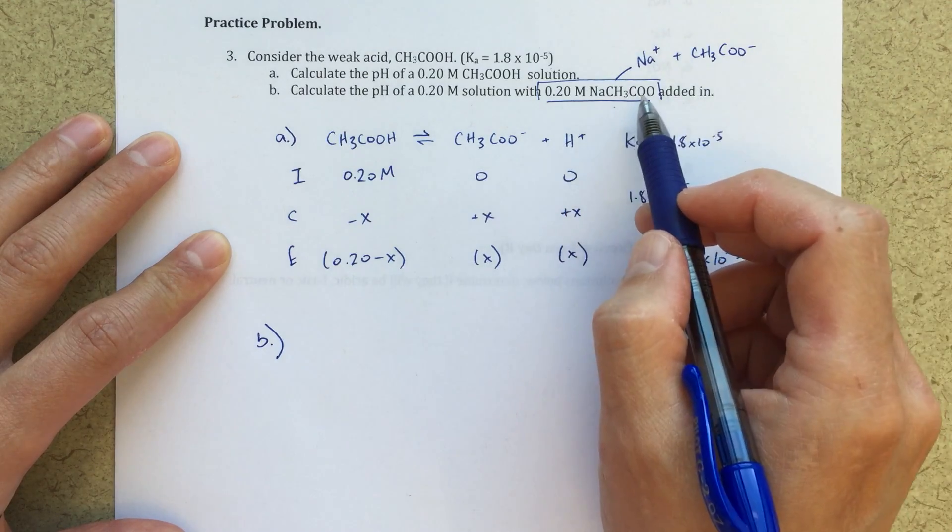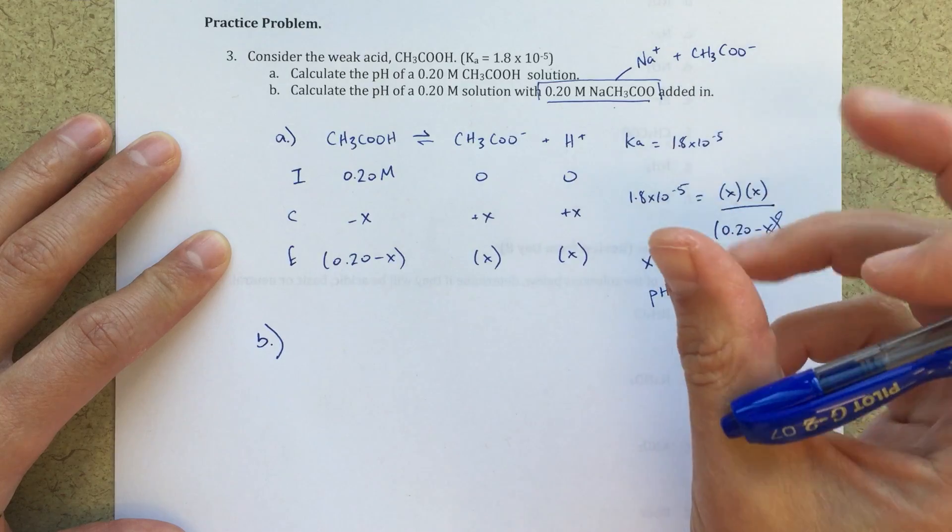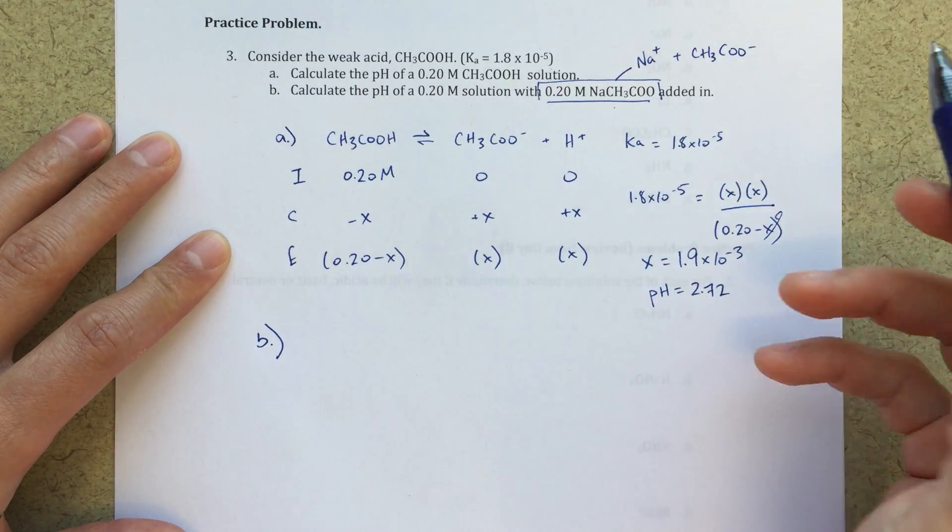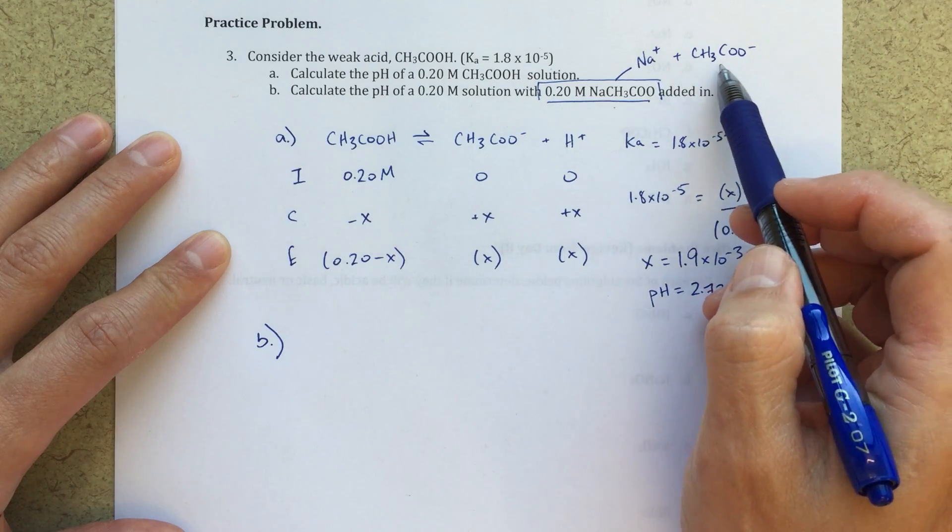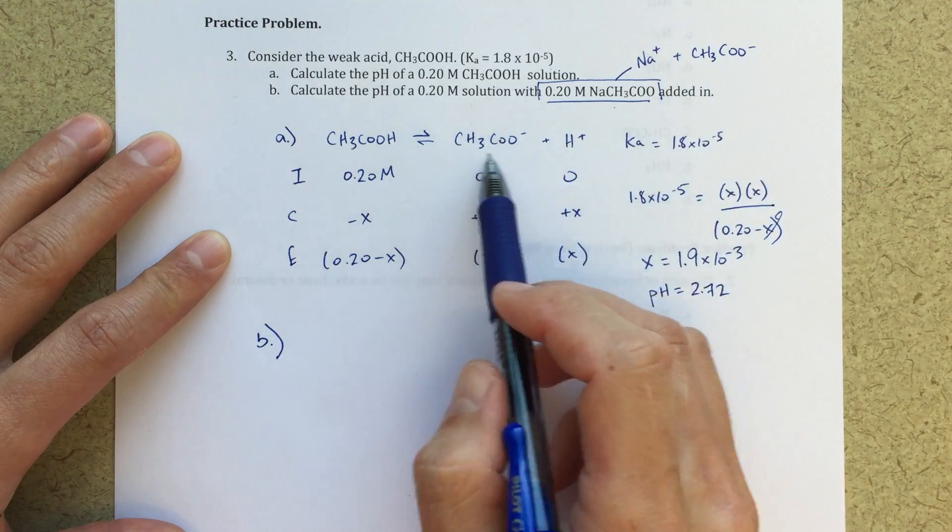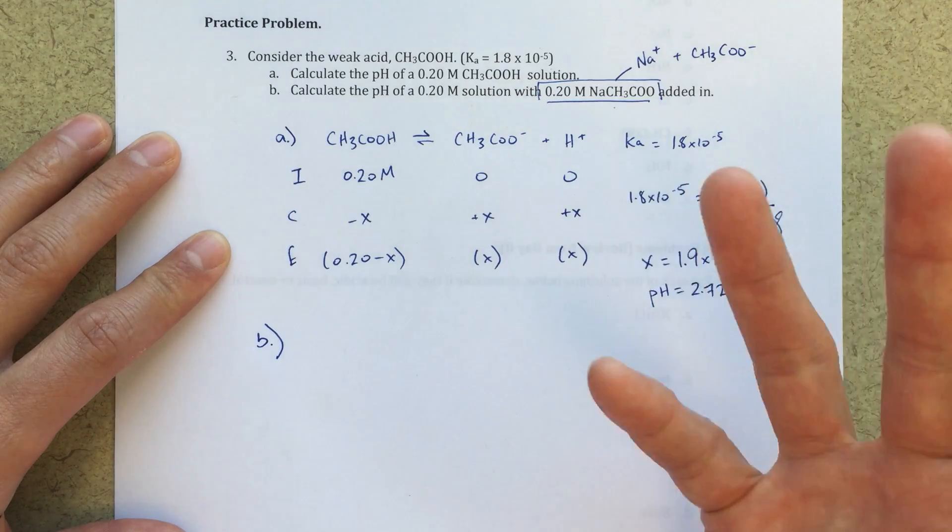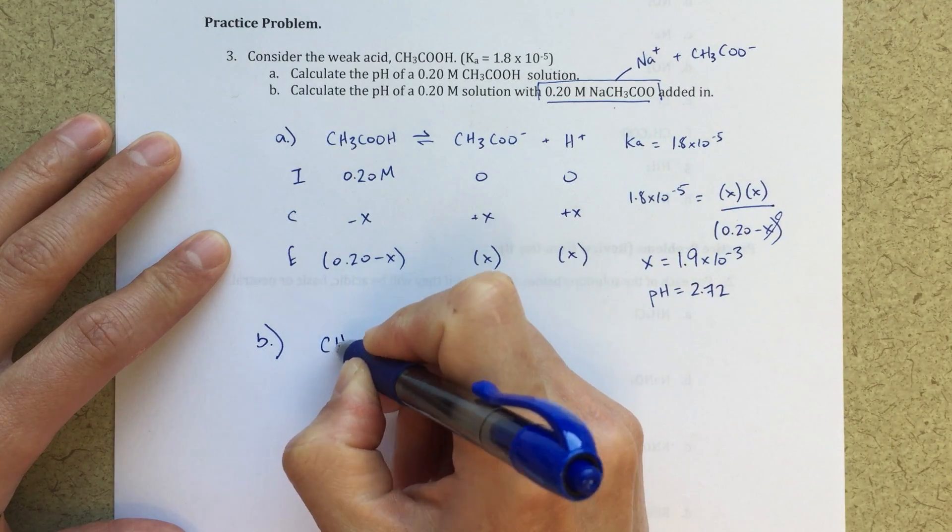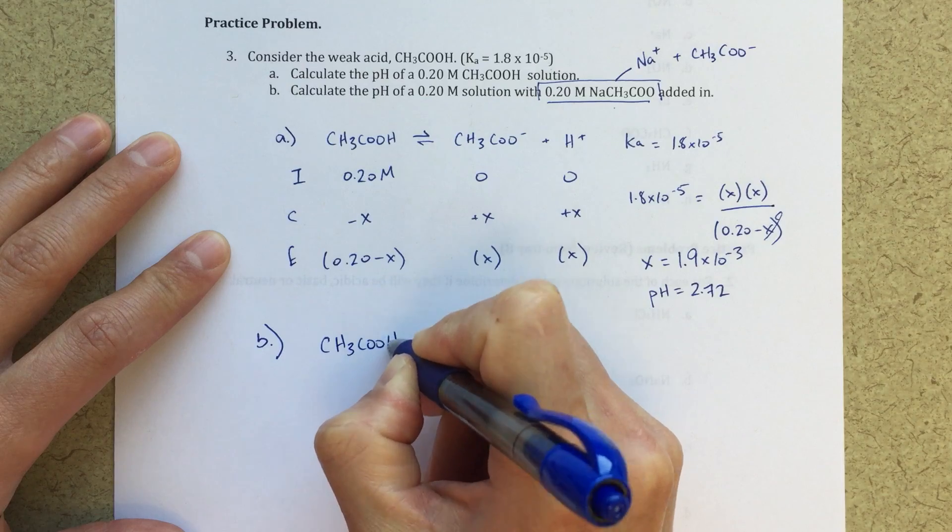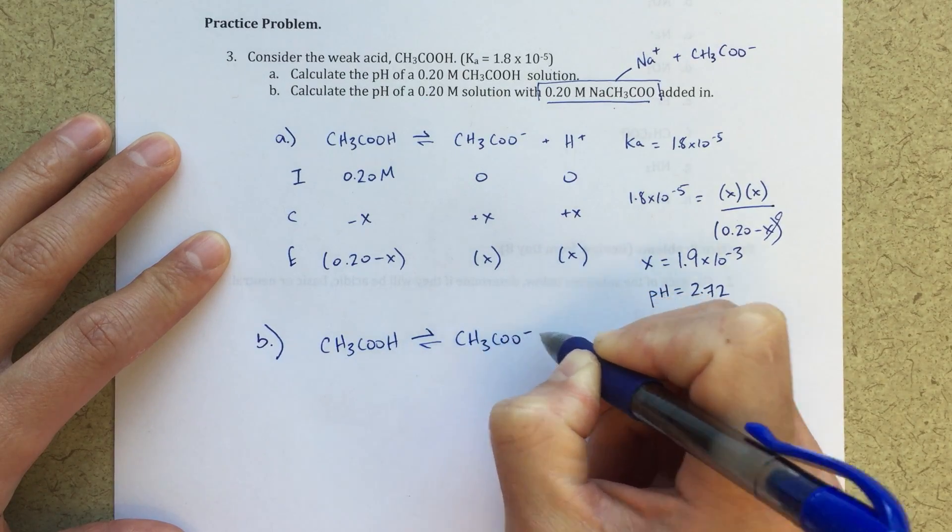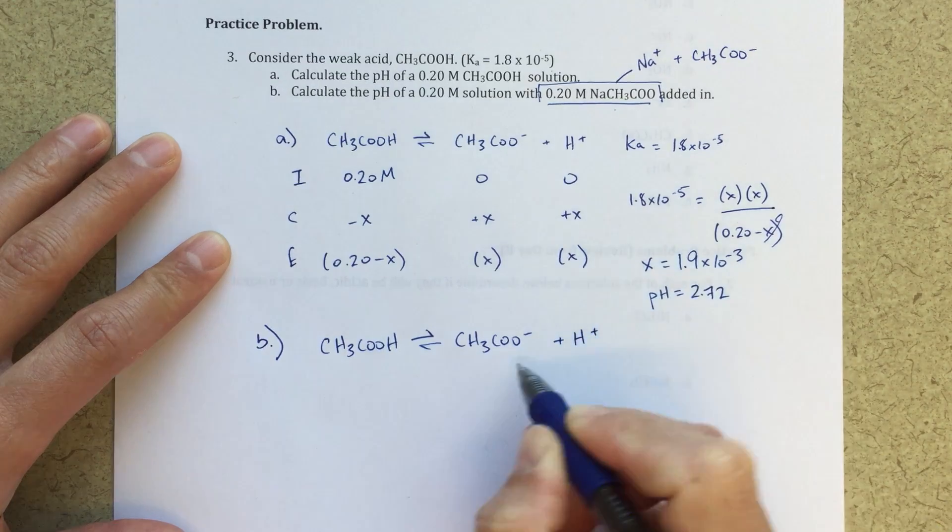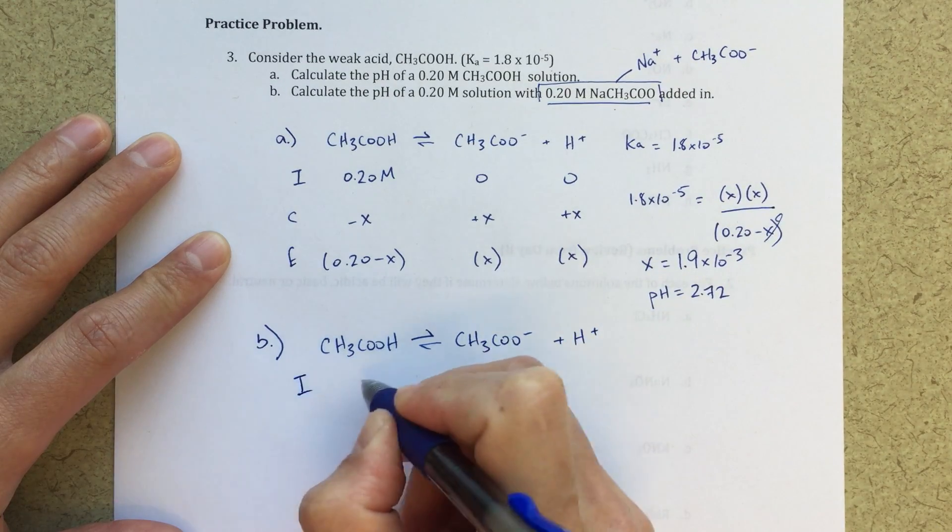This is sort of telling, this is going to be a source essentially of this common ion. We're talking about common ion effect. So this is really just the source of the common ion, the common ion CH3COO minus. I see that in my ice table here.